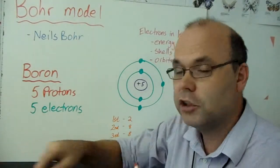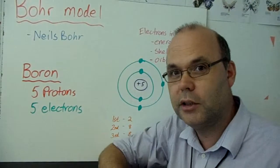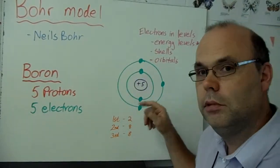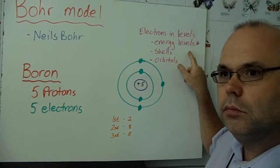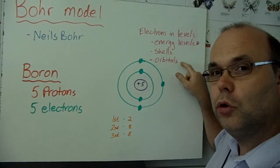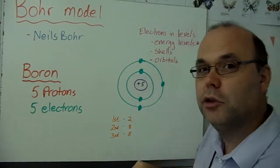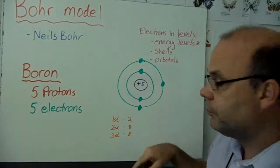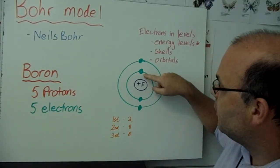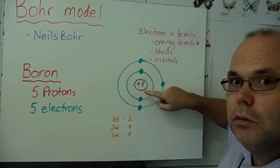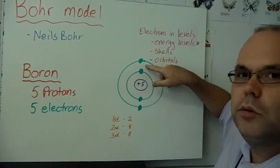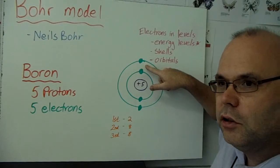A guy called Niels Bohr came up with a new way to look at atoms. Instead of just electrons flying around at random, he said they go in nice circles. And he called those circles energy levels. Some people call them shells or orbitals. I like energy levels best because this electron here, in the first energy level, has less energy than this one. It's not as excited.